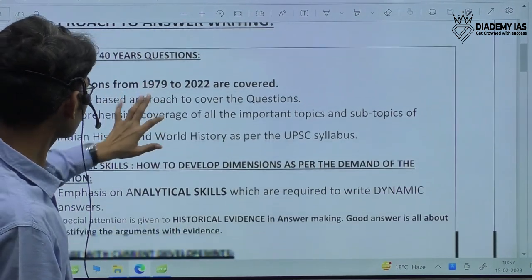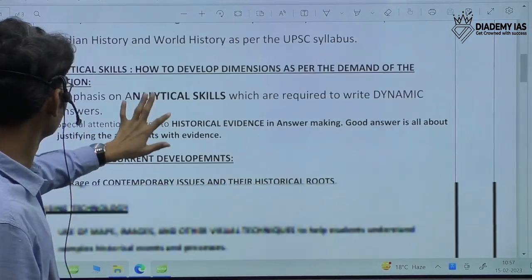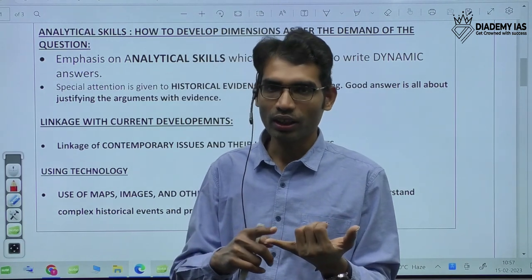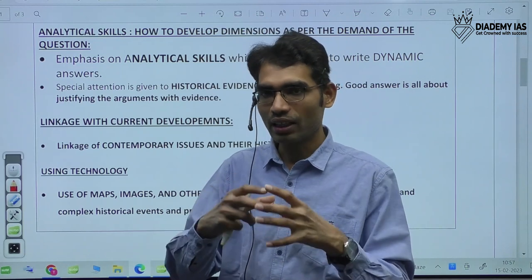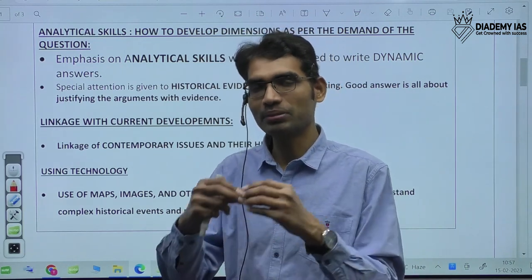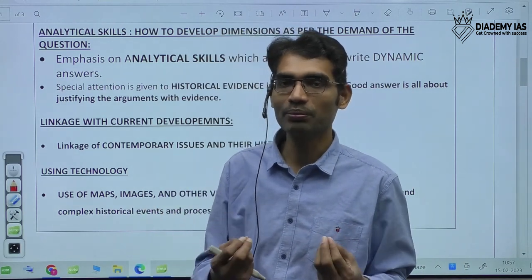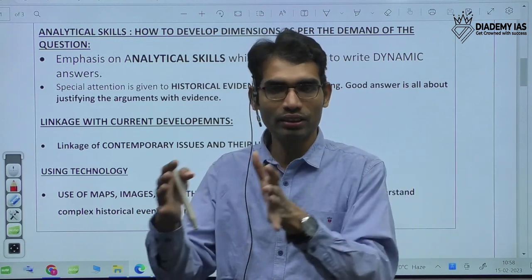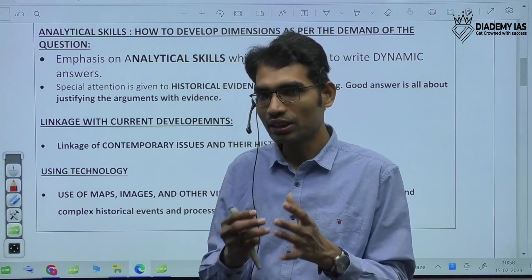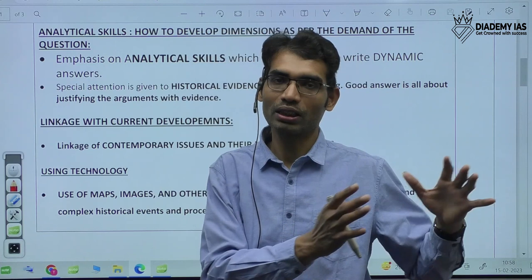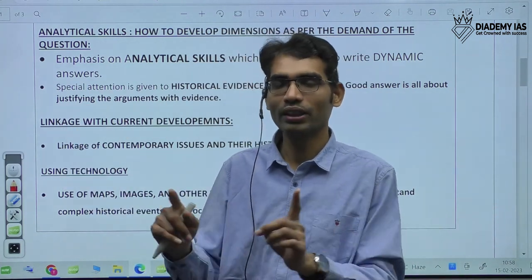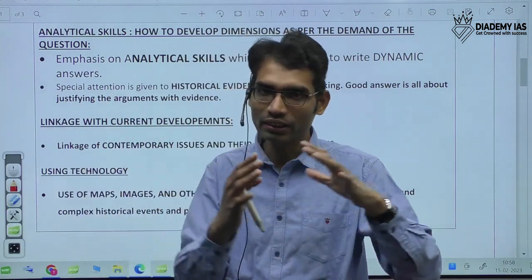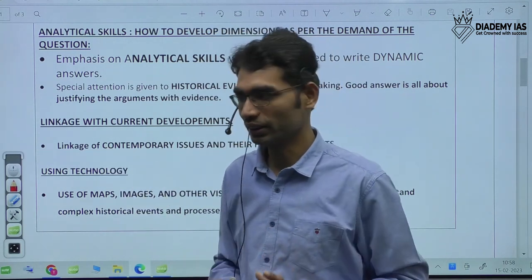When it comes to answer writing, we will cover nearly 40 years of previous year questions. We have to identify what keywords are coming in the previous years. There are keywords like elaborate, analyze, and assess. Sometimes they add adjectives like 'critically' — critically analyze. The term 'critically' means we have to highlight other perspectives as well. Historians have researched and given opinions, but some concepts have opposing viewpoints. When UPSC asks for critical analysis, we highlight not just the generally agreed view but the other opinions too. I will evaluate your answers and give complete analysis about keywords and how to write answers.